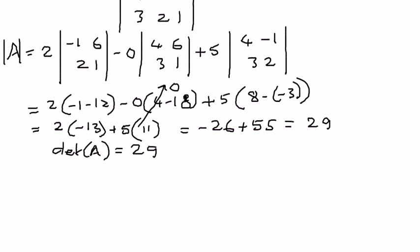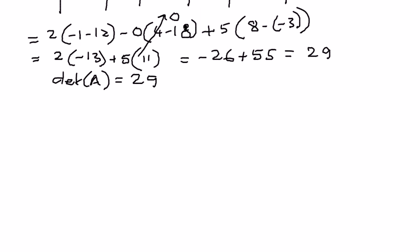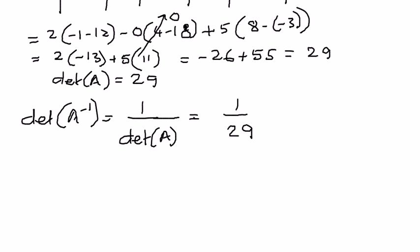What we need to prove now is that the determinant of A inverse, according to the property, can be written as 1 over the determinant of A. Therefore, this is our answer: 1/29. This is how we use the properties of determinants to arrive at the solution.